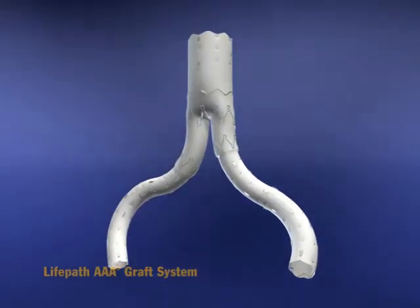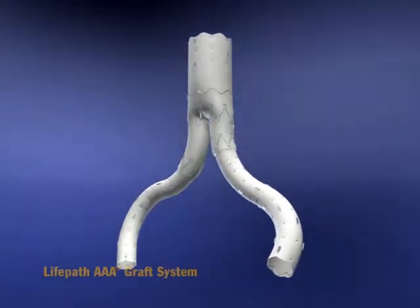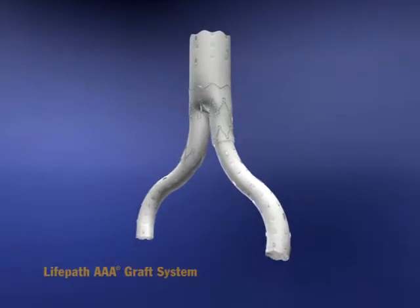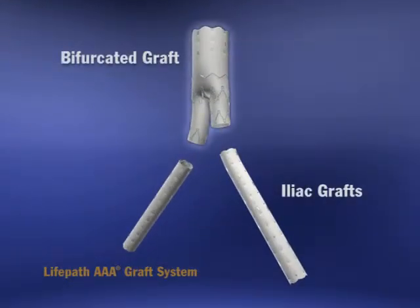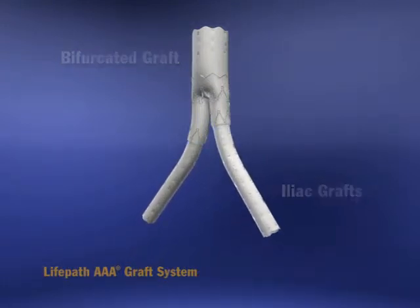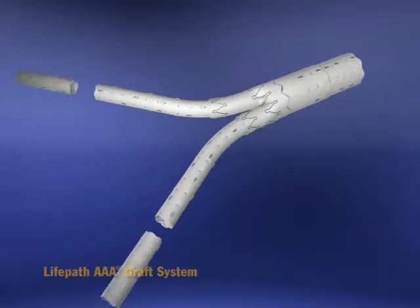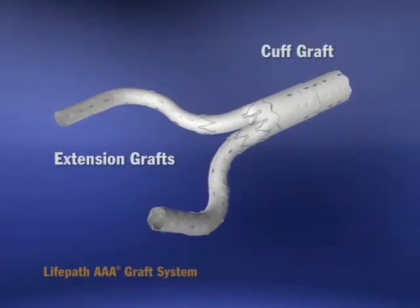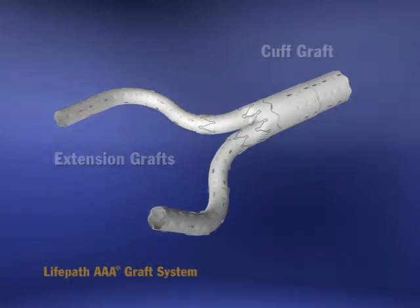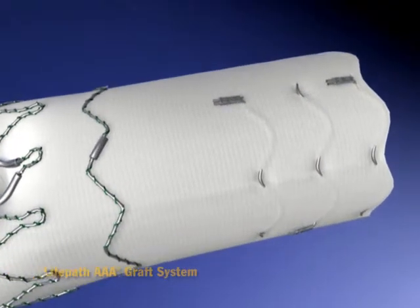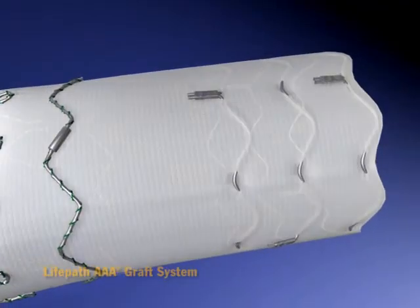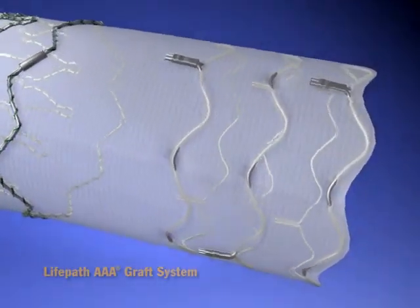Of abdominal aortic aneurysms. The LifePath Triple-A Graft System is modular in design, comprised of three grafts: one bifurcated and two iliac. Cuff and extension grafts are also available to meet specific anatomical requirements. LifePath Triple-A grafts are made of the same woven polyester material used in conventional open surgical repair.